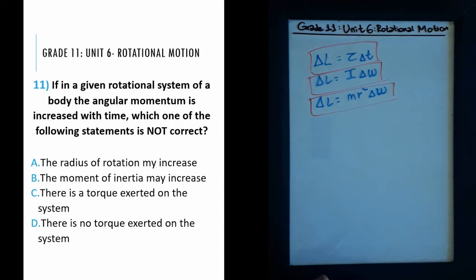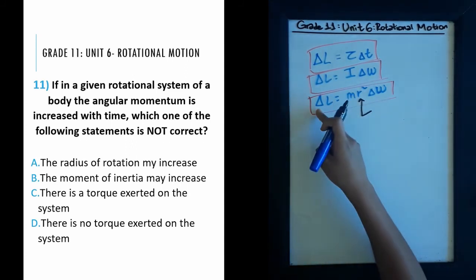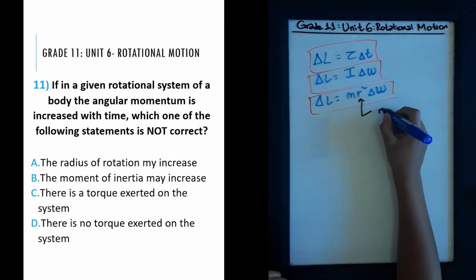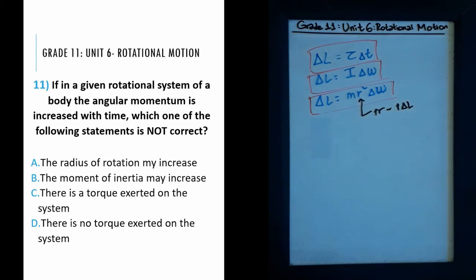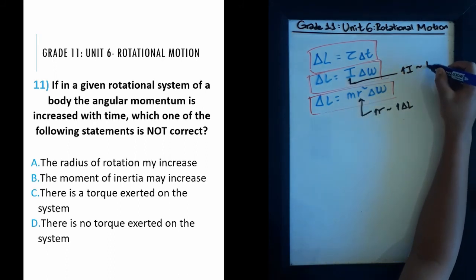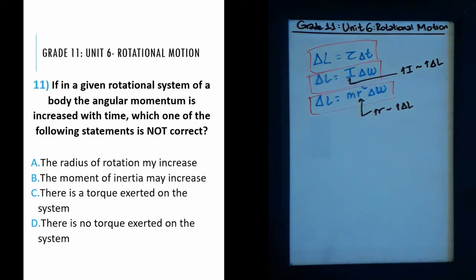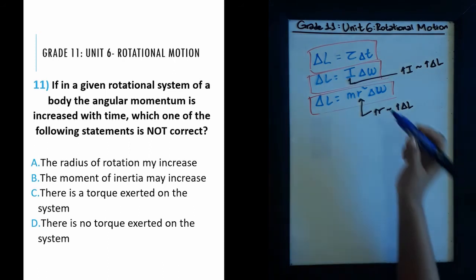Looking at the choices: choice A says the radius of rotation may increase — from L = mr²·Δω, if radius increases, angular momentum increases, so that is correct. Choice B says the moment of inertia may increase — from L = I·Δω, if moment of inertia increases, angular momentum increases, so that is also correct. Choice C says there is a torque exerted on the system — from ΔL = τ·Δt, the presence of a torque does cause a change in angular momentum, so that is correct too.